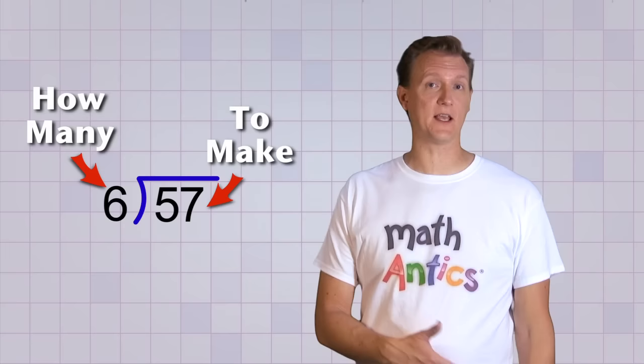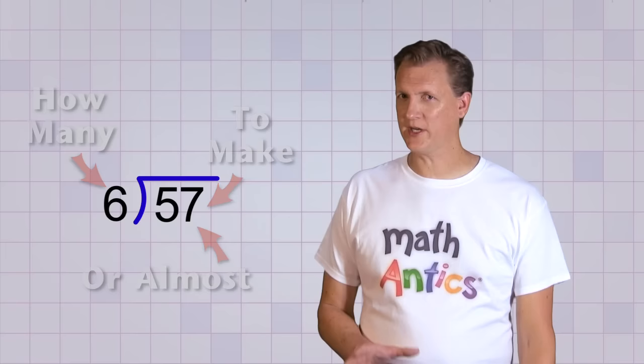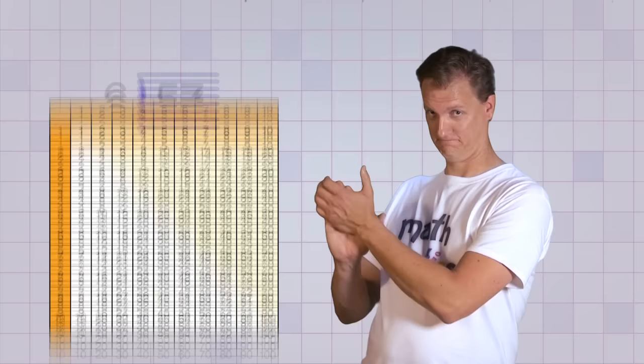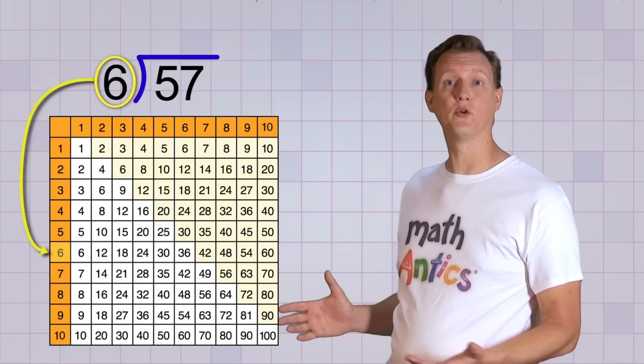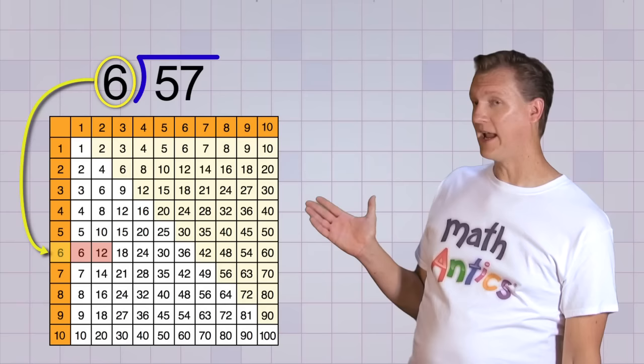Let's do one more before you try working some out on your own, okay? Let's do 57 divided by 6. First, we set up our problem, and then we ask the question, how many 6s do we need to make 57 or almost 57? Well, this one's a little more tricky, so I think I might use a multiplication table to help me out. The nice thing about a multiplication table is that it shows me all the multiples of a number. For example, since I want to know how many 6s I need, I can look on this row of the chart and see all the multiples of 6.